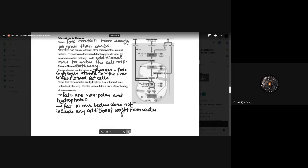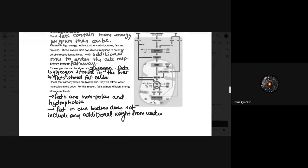The last thing I really wanted to talk about with regards to fats and why they are a better storage mechanism for energy is that they're nonpolar and hydrophobic. Fats in our body do not include any additional weight from water and they don't pull any water away from processes that are required. They also don't store water because storing water in cells is bad for multiple reasons, one of which is that it's desperately needed in that cellular respiration process. The key component here is that that nonpolar hydrophobic nature of fat allows for it to be better stored as energy and it doesn't include any additional weight from water.